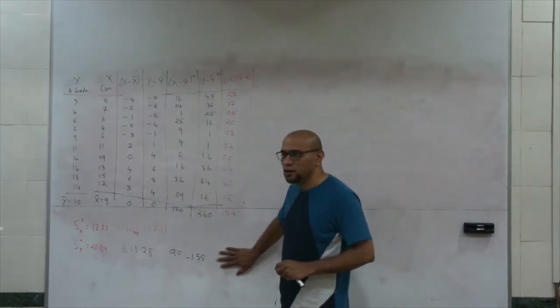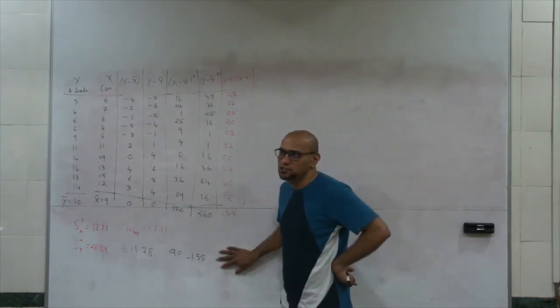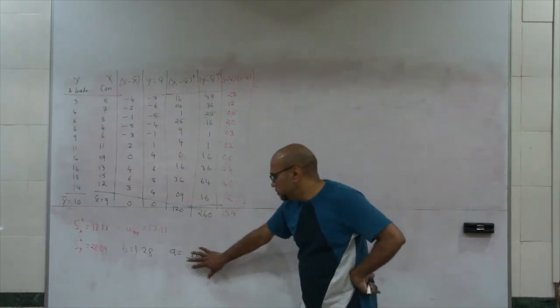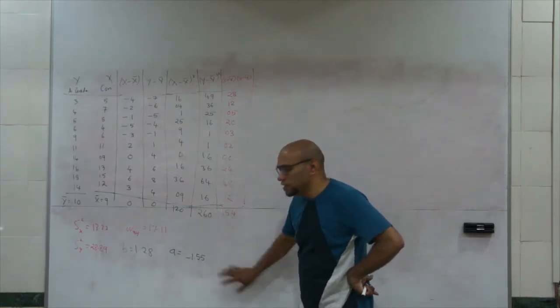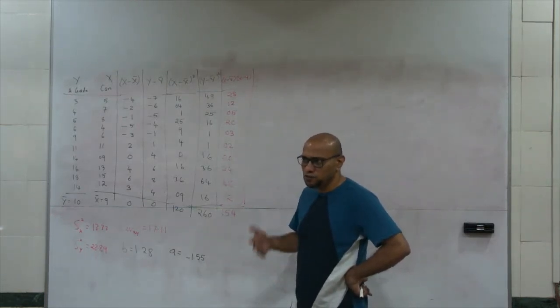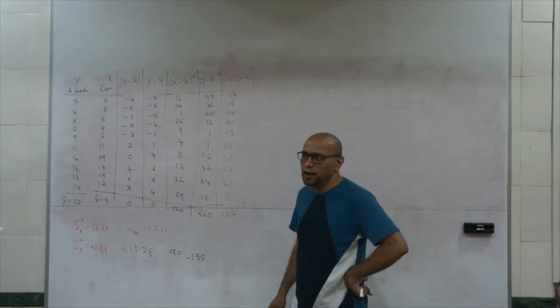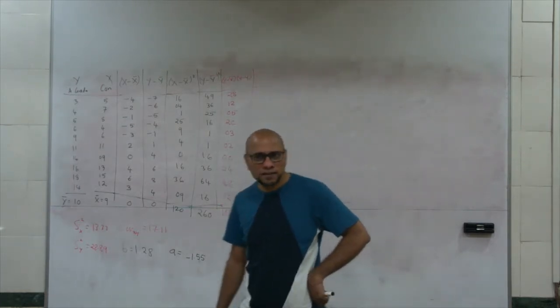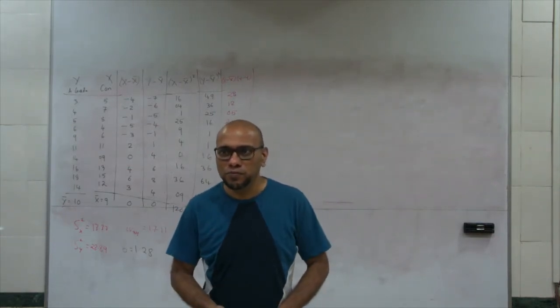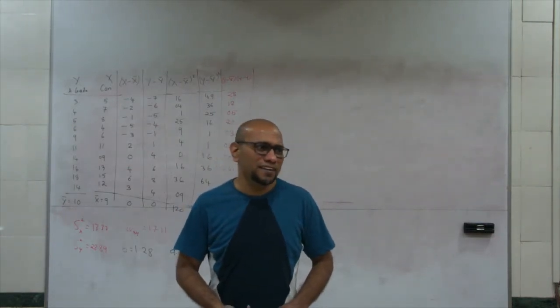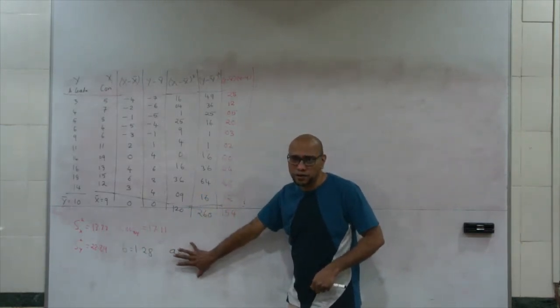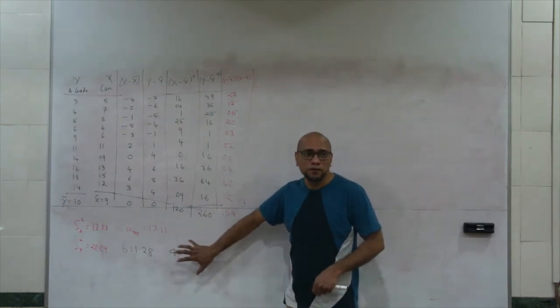And so, this interpretation that when conscientiousness is 0, the academic grades are negative 1.55 is not applicable to this. For two reasons. One, it doesn't take 0 as a value. Two, academic grades can't be negative. Academic grades begin from 0. So, what does that mean? This interpretation is not really a tenable interpretation in this particular case.